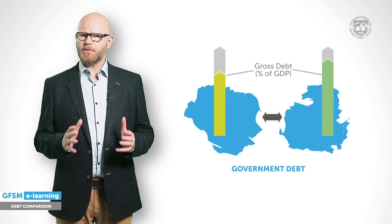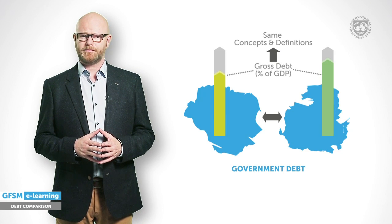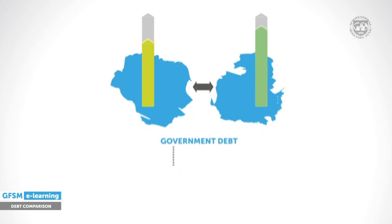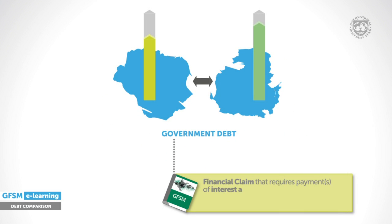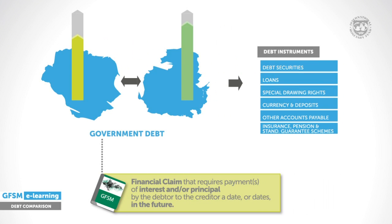Obviously, using the same concepts and definitions is another vital starting point. The GFSM methodology lays out an internationally agreed definition for debt as a financial claim that requires the payment of interest or principal from the debtor to the creditor in the future. Six categories of liabilities in the GFSM framework meet this definition and constitute gross debt.